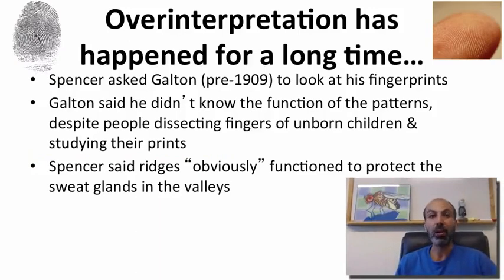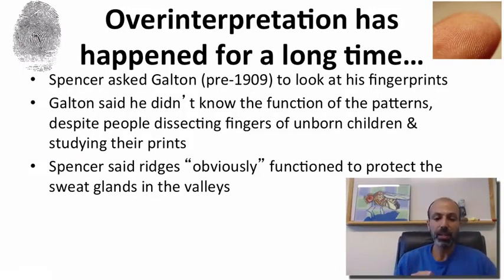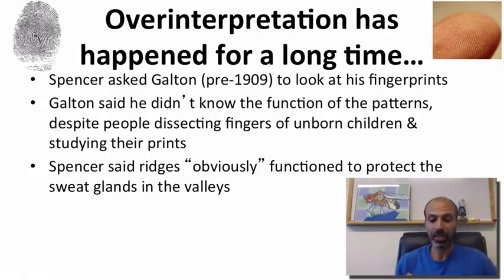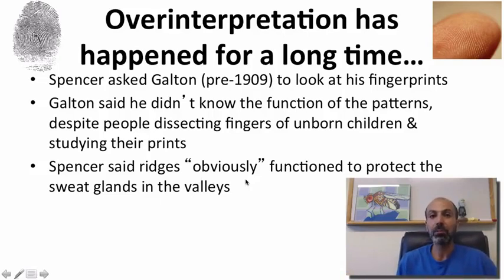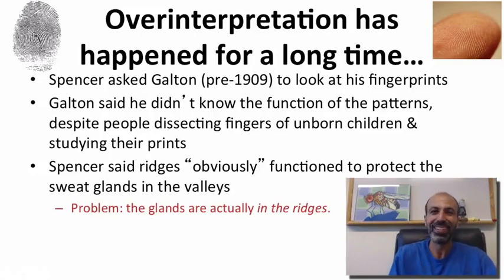Over-interpretation goes back over a hundred years. Before 1909, Spencer asked Galton to look at his finger. Galton said he didn't know the functions of these patterns, and many people had studied this — dissecting the fingers of unborn children, trying to study their prints. Spencer suggested, well, the ridges obviously function to protect the sweat glands in the valleys. Sounds like it makes sense — but the problem is the glands are actually in the ridges themselves. So it doesn't make sense at all.